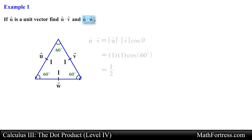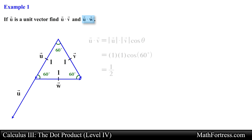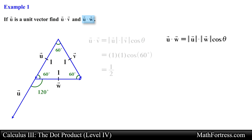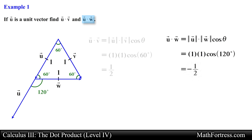Next let's find u·w. In order to find the dot product of these two vectors we need to align them tail to tail, so let's move the tail of vector u and align it with the tail of vector w. Next we need to calculate the angle between these two vectors. We can find the angle by using linear pairs and subtracting 60 degrees from 180 degrees, giving an angle of 120 degrees. Substituting these values and simplifying, we obtain negative one half as our final answer.